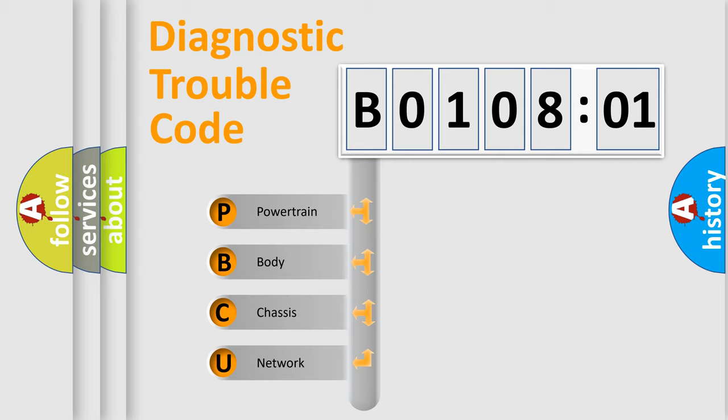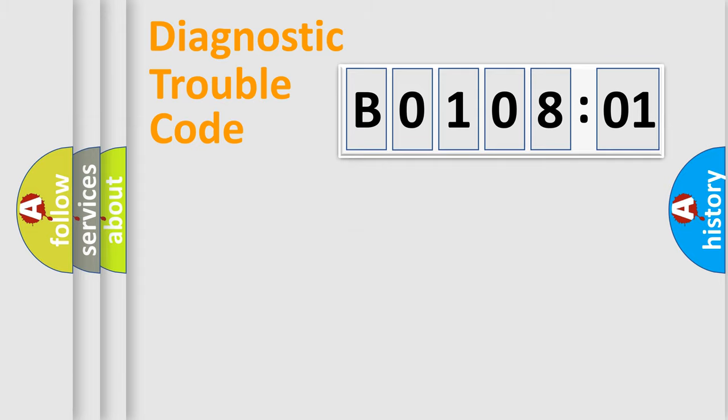We divide the electric system of automobile into four basic units: Powertrain, Body, Chassis, Network. This distribution is defined in the first character code.